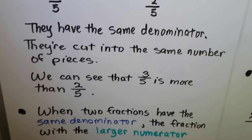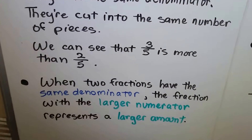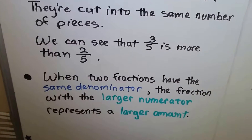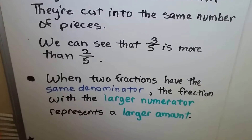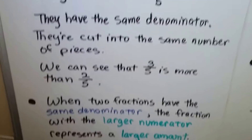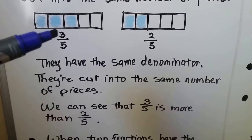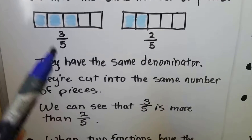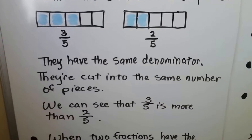When two fractions have the same denominator, the fraction with the larger numerator represents a larger amount. So because that's a three, and three is larger than two, and they have the same denominator, that's the larger amount.